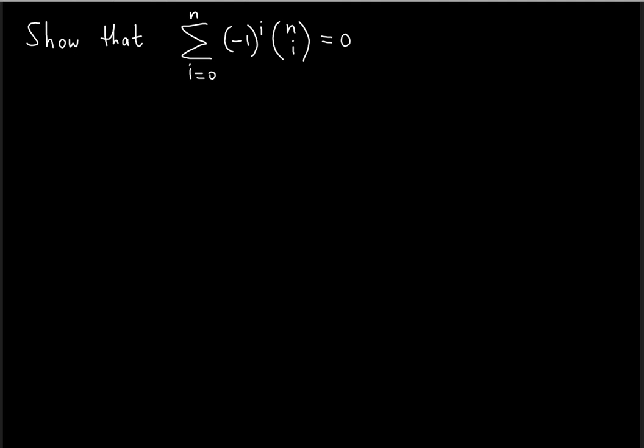We want to show here that the summation indicated on the left side of this equation is equal to zero. So the sum of all terms that are indicated by the summation here is equal to zero. How do we do that?